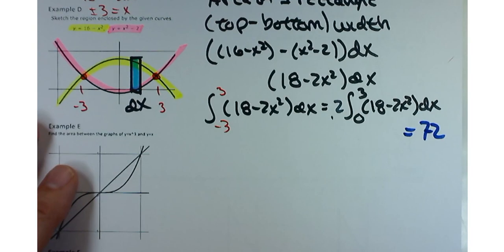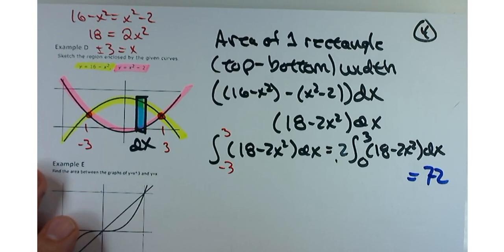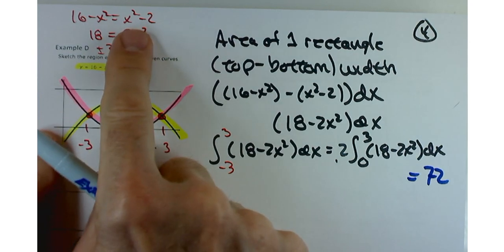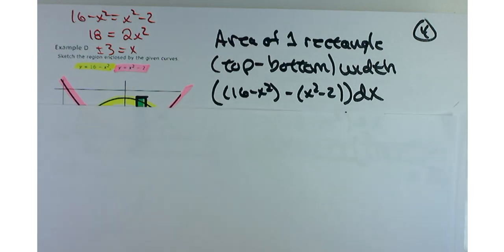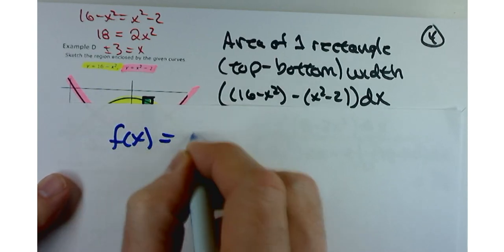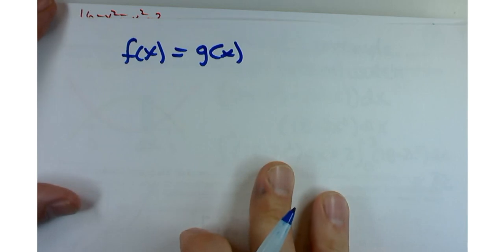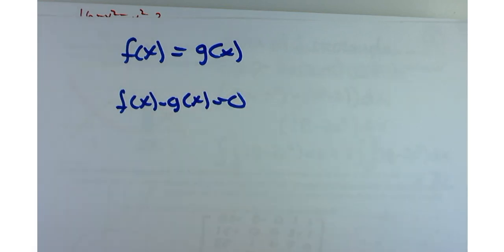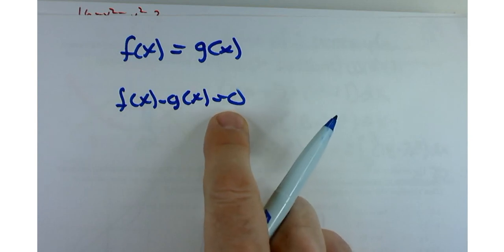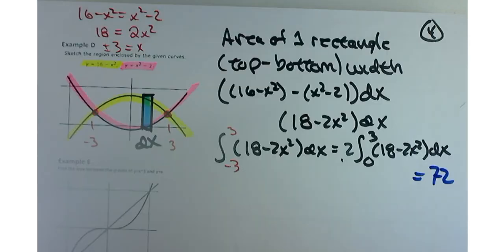Comments or thoughts on example D? When you set them equal to each other, it's just the equivalent of doing top minus bottom anyways. So can you just take the equation for that? Well, top minus bottom equals 0 is what it's equivalent to. But that's also equal to setting them equal to each other. So they are the same thing.